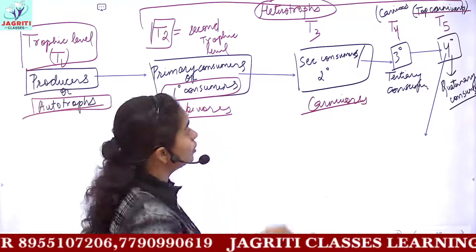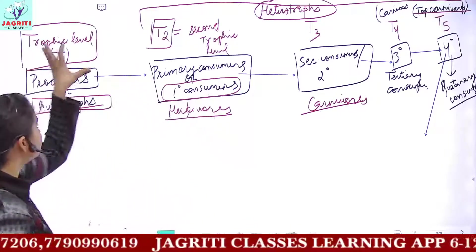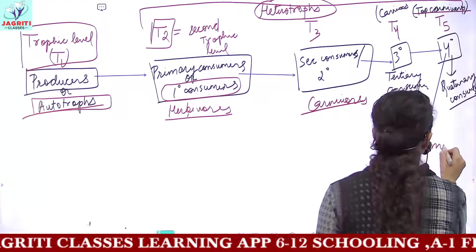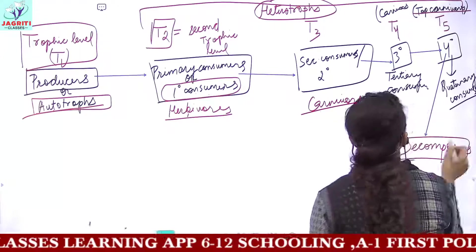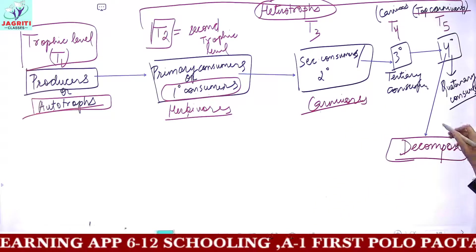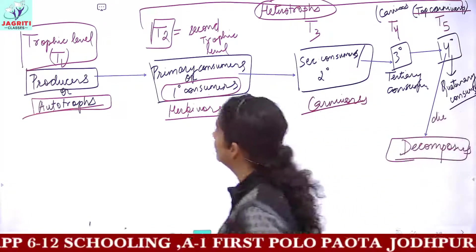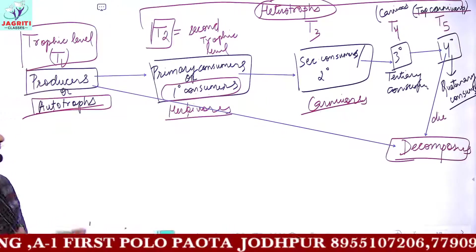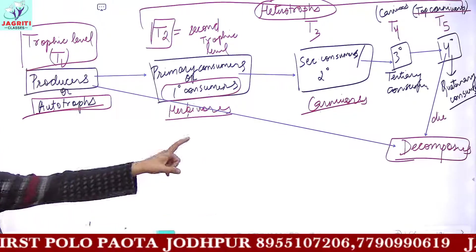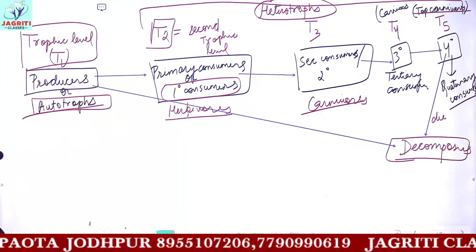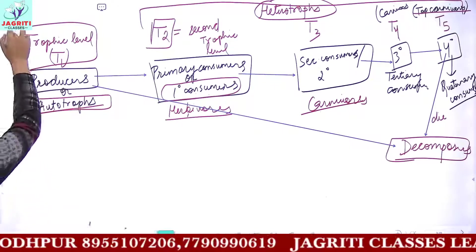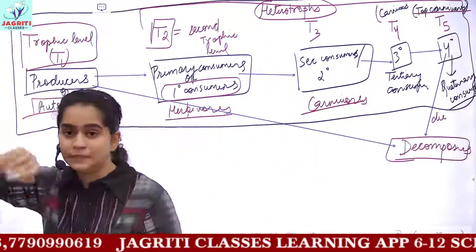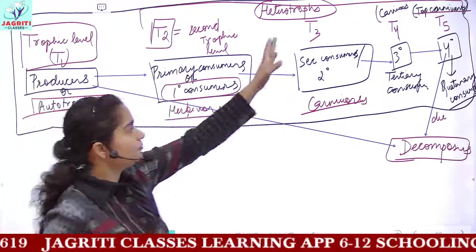After producers and the different consumers, you can also have decomposers. When the last trophic level organism dies, or when plants die, they will be acted upon by the decomposers. Decomposers are present at the end of the food chain. If we do not include decomposers, then the sequence from producers through different types of consumers gives you the food chain.